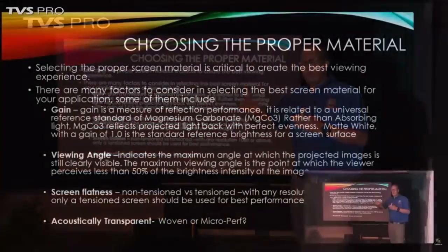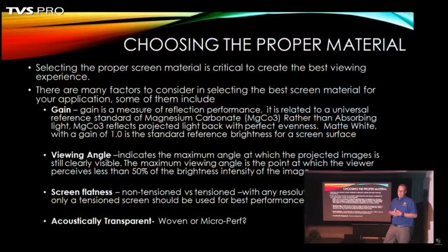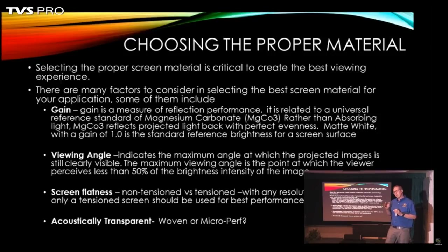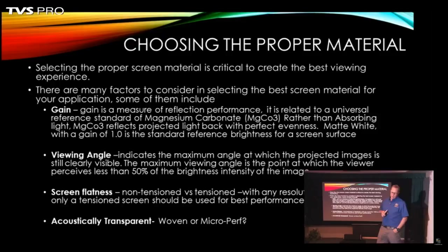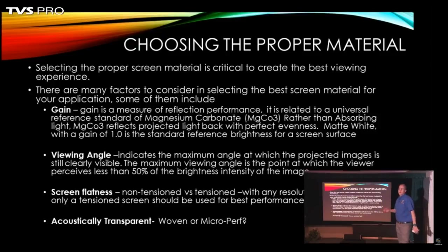Viewing angle is basically how far off-axis you can get where the image is still visible — where you're not perceiving more than about a 50% shift in brightness. That's how they rate the viewing angle of a screen material.